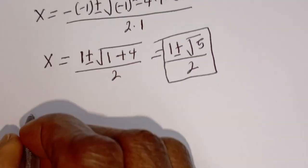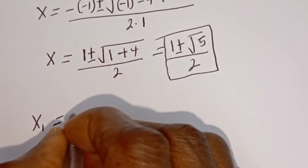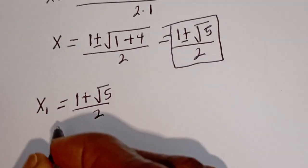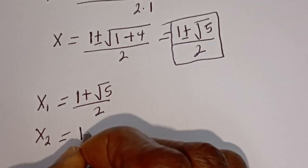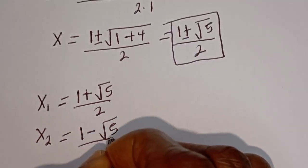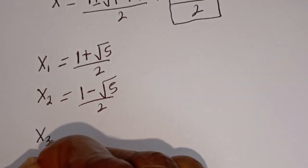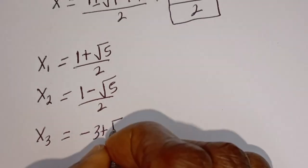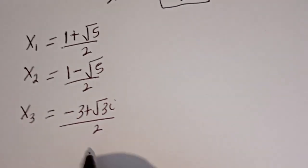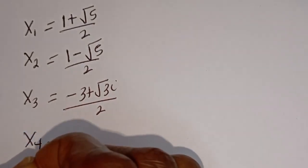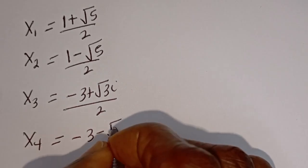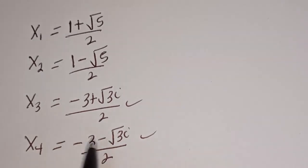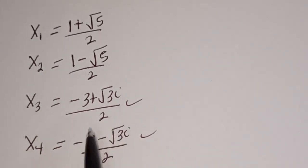Therefore our final answers are: S1 equals (1 plus square root of 5) divided by 2. S2 equals (1 minus square root of 5) divided by 2. S3 equals (minus 3 plus square root of 3i) divided by 2. S4 equals (minus 3 minus square root of 3i) divided by 2. You can see that we have two complex solutions. I hope you enjoyed the video. Thank you for watching. Please don't forget to like, share, comment and subscribe to my channel.